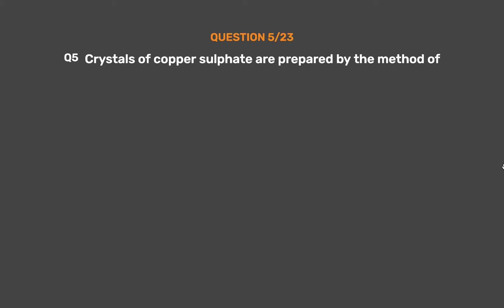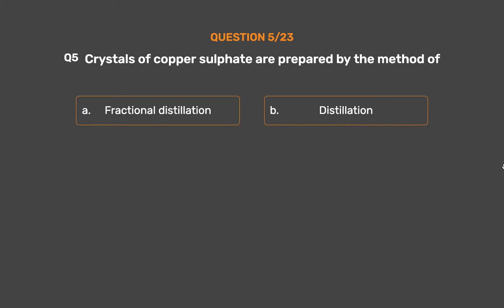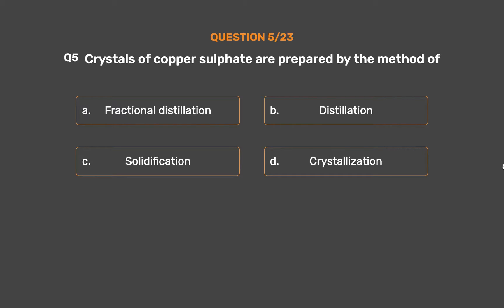Question number 5. Crystals of copper sulfate are prepared by the method of — Option A: Fractional distillation. Option B: Distillation. Option C: Solidification. Option D: Crystallization.